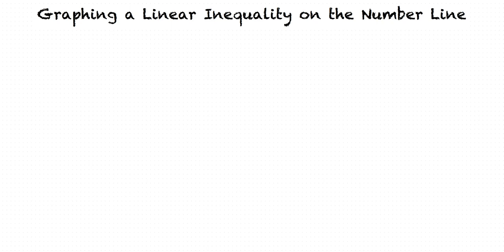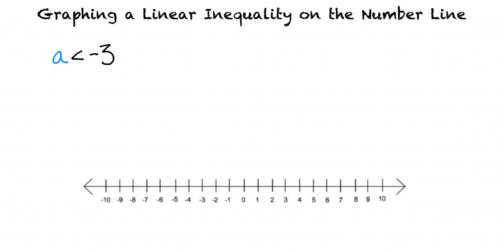Here's an example of a linear inequality: a is less than negative 3. In order to graph this, we want to highlight all the values on the number line that a can equal while still making this inequality true.